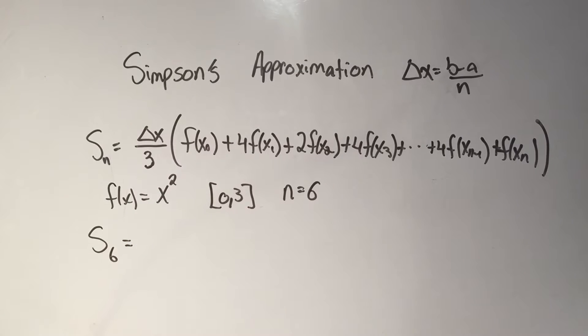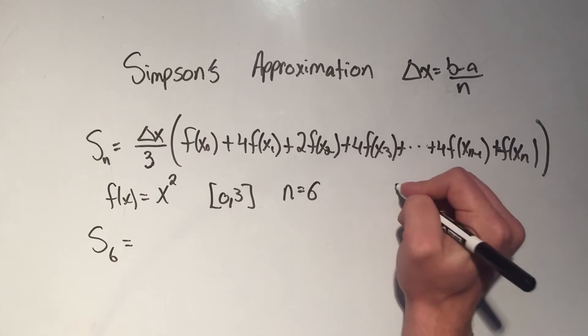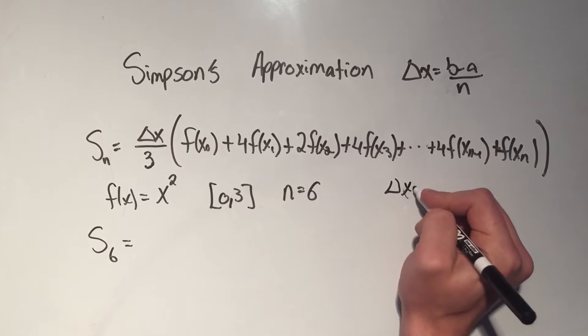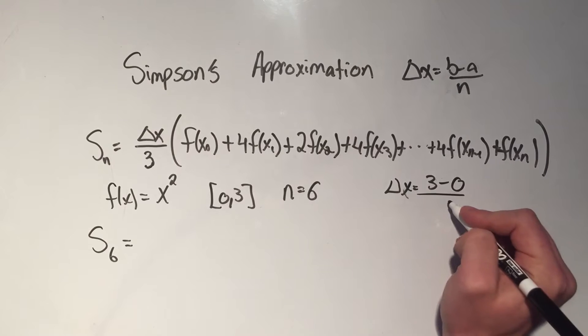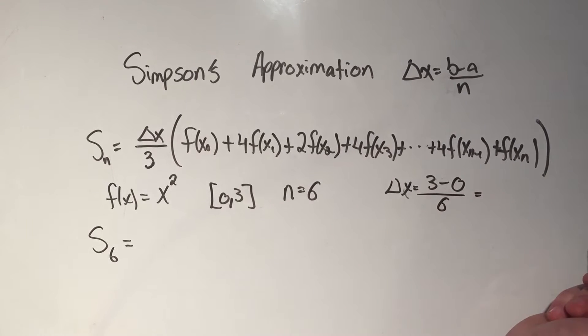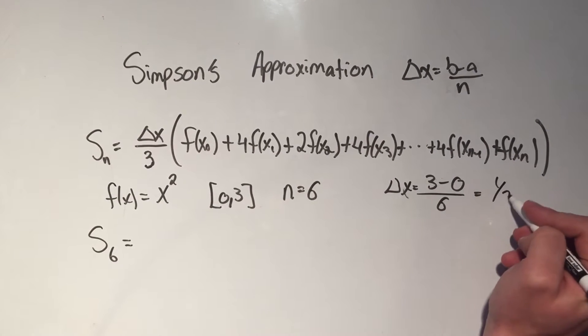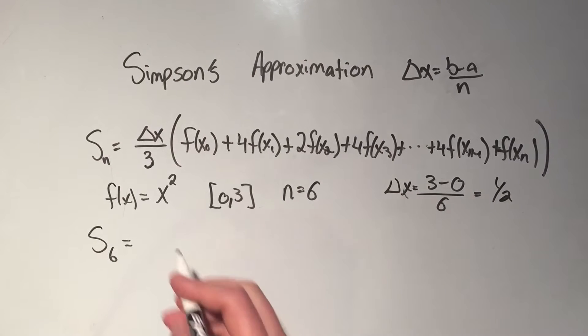And that means I'm going to do S sub 6. And that formula is delta x over 3. Remember, delta x is b, that's 3, minus a, that's 0, over n, that's 6. 3 over 6 is a half, and if you watch the other videos, this part's the same.